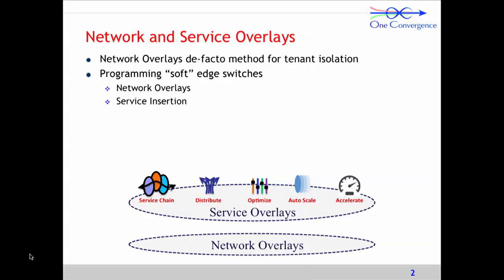We call this the service delivery platform. As part of this, the kinds of things we do are basically insertion of a service at L2 and L3, and chaining of these services. When I say service overlays and services, I'm referring to network services — things like VPN, firewall, load balancer, WAF, IPS, IDS — these types of services. That is what we're focused on.